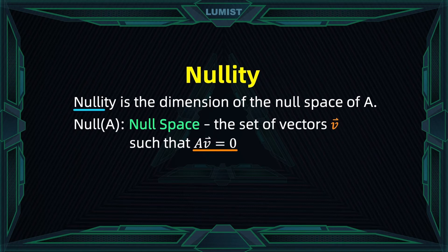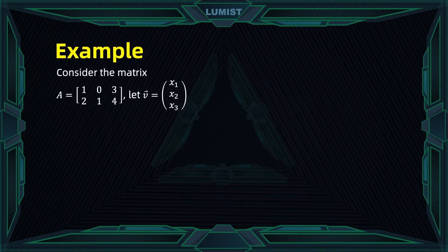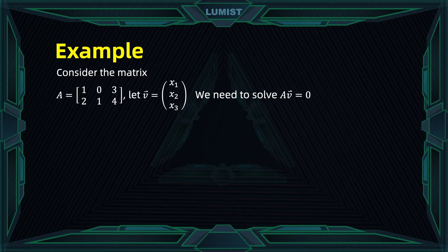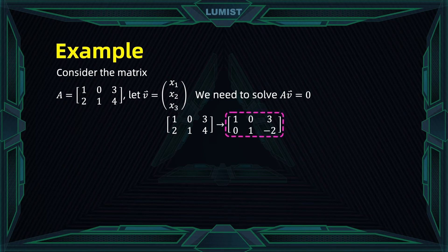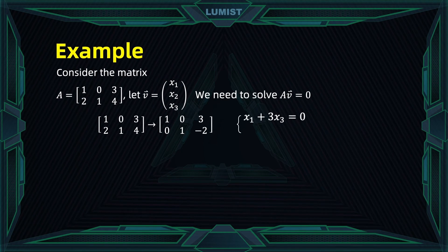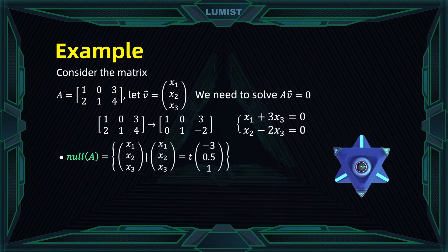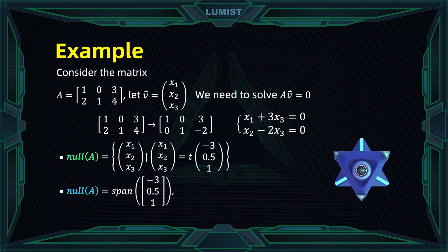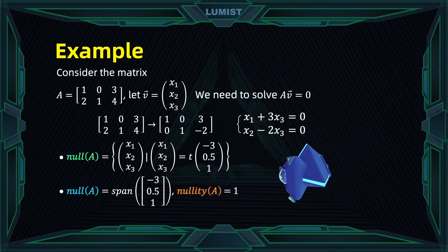The nullity of a matrix is the dimension of the null space. For a quick example on finding the null space and nullity of a matrix, look at our previous example. To find the null space we need to solve the system of equations represented by A times V equal to 0, and we can do this by performing row operations to reduce our matrix into its reduced row echelon form. This gives us two conditions: x1 plus 3 times x3 is equal to 0, and x2 minus 2x3 is equal to 0. Writing this in vector form we have t times vector [-3, 0.5, 1] as the solution, which is the subspace spanned by the vector [-3, 0.5, 1] with a dimension of 1. Hence, the nullity of the matrix A is equal to 1.